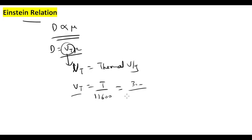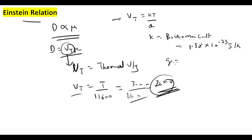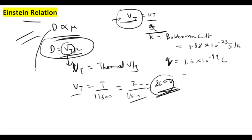At room temperature, the thermal voltage Vt is approximately 26 millivolts. We can also write Vt = kT/q, where k is the Boltzmann constant (1.38 × 10⁻²³ J/K), q is the charge of one electron (1.6 × 10⁻¹⁹ C), and T is temperature. This is the Einstein relationship, where D is the diffusion constant and μ is the mobility.